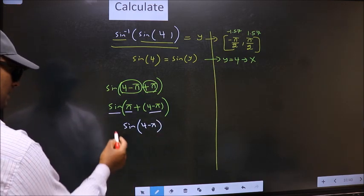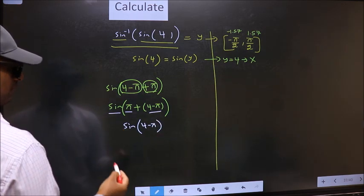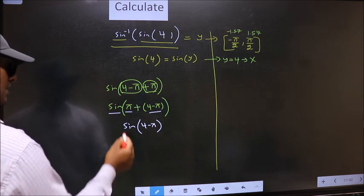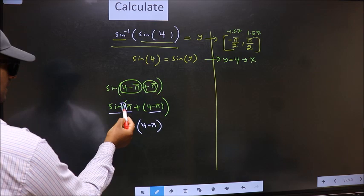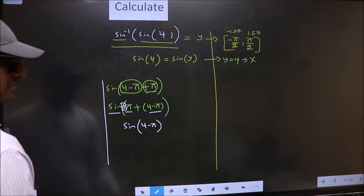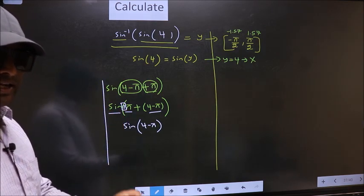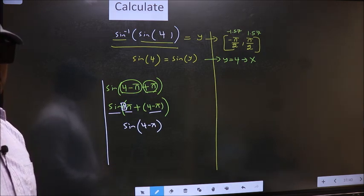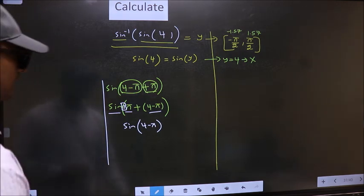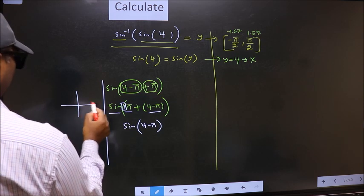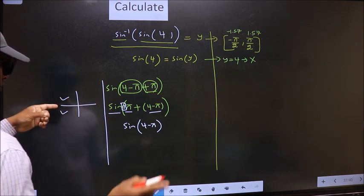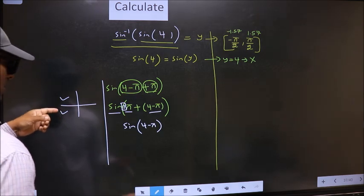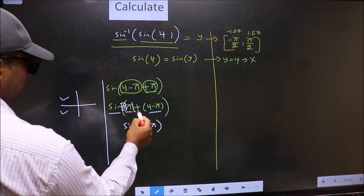Now the question is will we get here plus or minus. To answer that we should look at the number before pi which is 1, and 1 is odd. And all the odd multiples of pi lie either in the second or in the third quadrant.